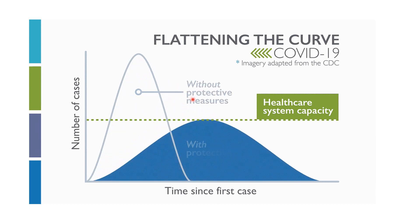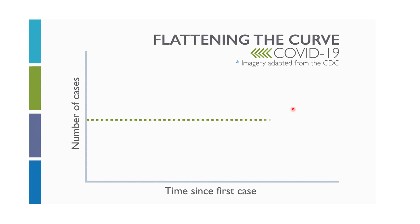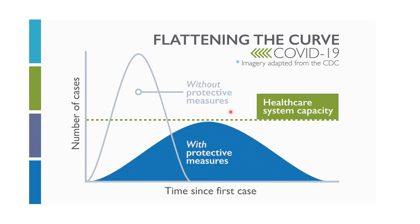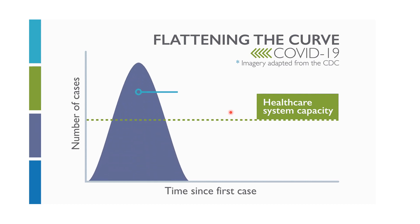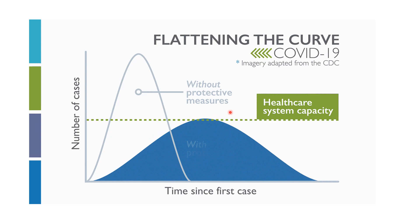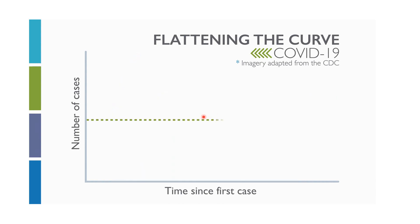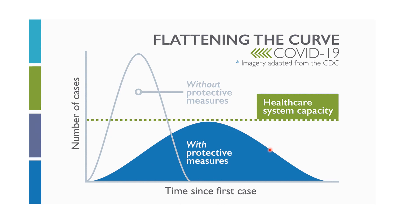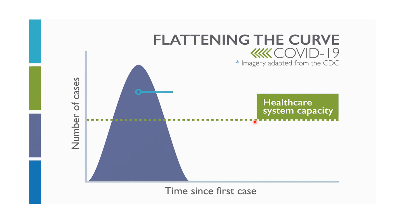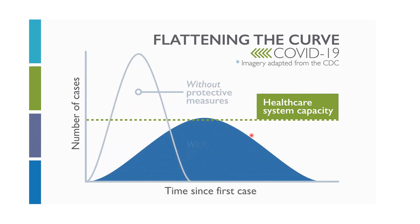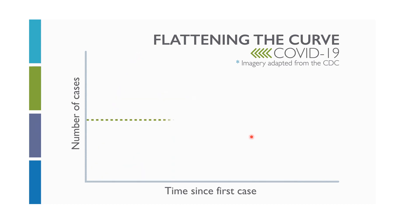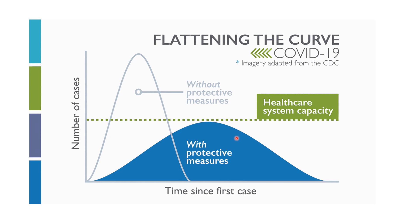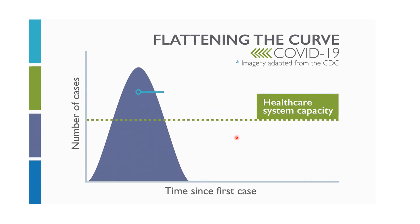The dark blue curve represents the scenario without protective measures — if no measures are followed, the healthcare system will be overwhelmed, with increasing cases every day, insufficient hospital beds, and too few doctors for each patient. However, if we follow protective measures, the curve will flatten. By following WHO guidelines, we can ensure healthcare facilities remain available for every individual so that no person dies unnecessarily.